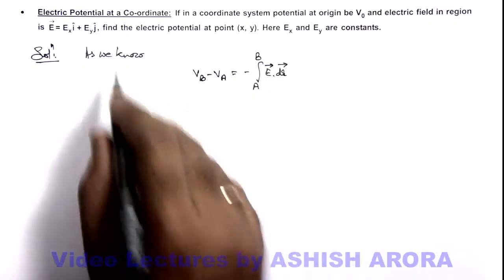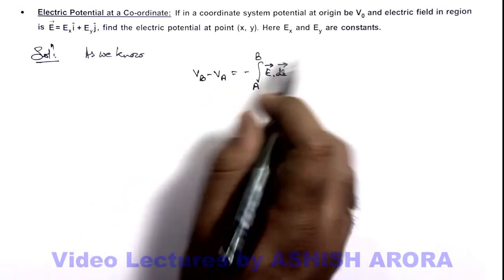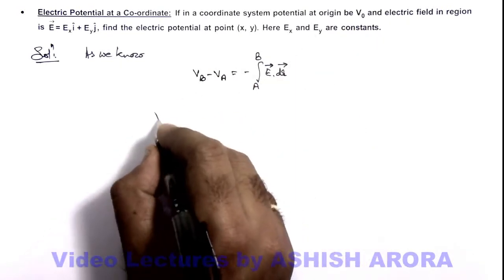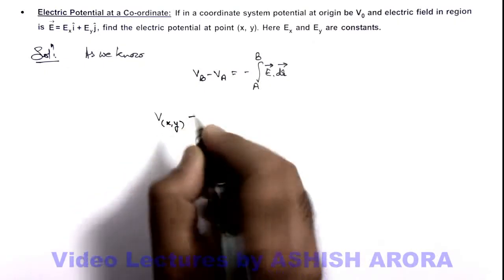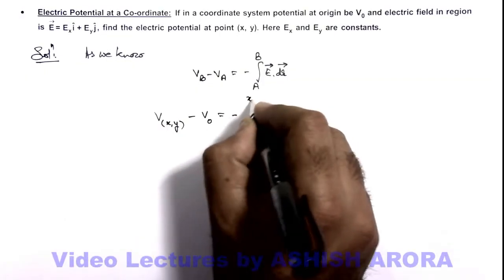And here in this situation we are required to find the potential at a point (x, y), and potential at origin to be given as V₀. So here we can write potential at a general coordinate (x, y) minus V₀ can be written as negative of integration from zero to (x, y).